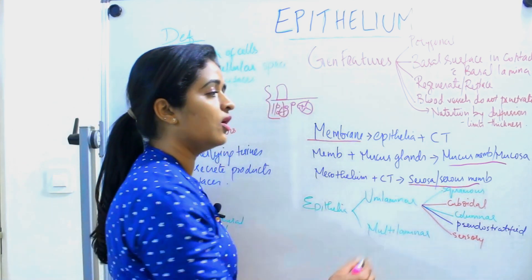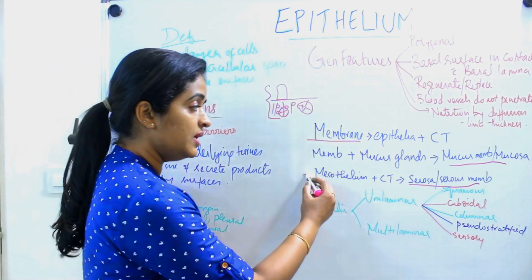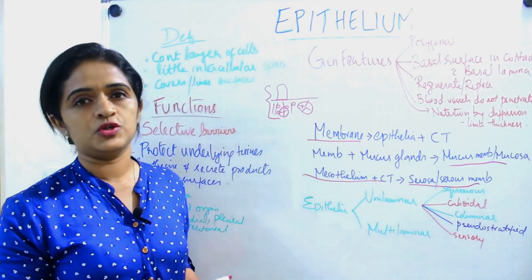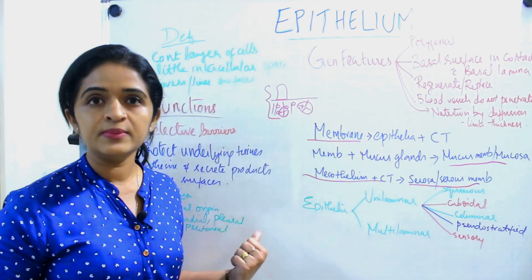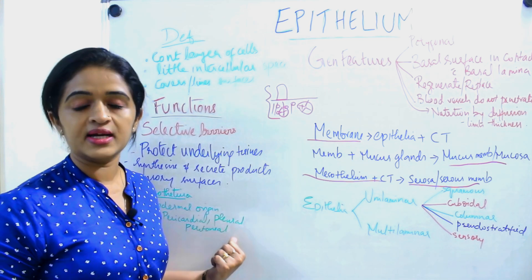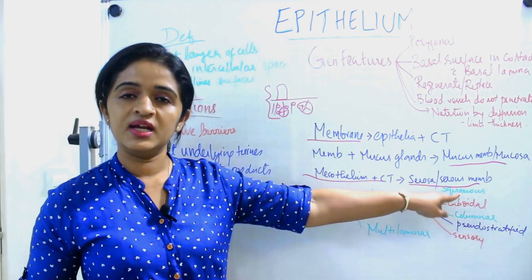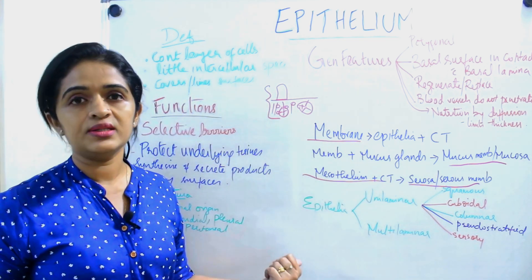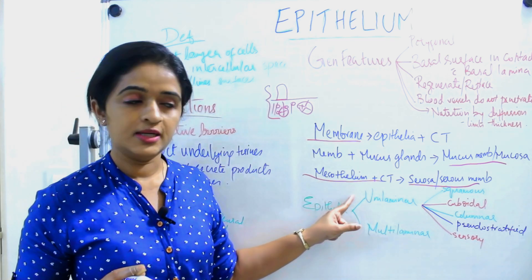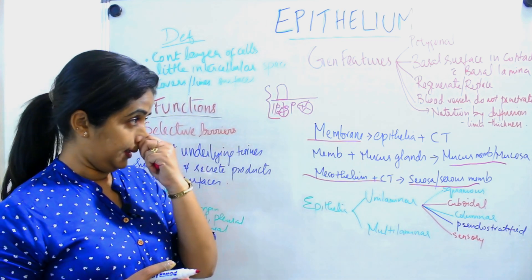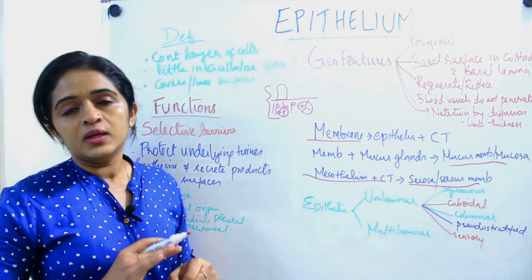Another entity is known as serous membrane or serosa. When will you call it that? Serous membrane or serosa is nothing but mesothelium along with its connective tissue. We already mentioned that mesothelium are epithelial cells derived from mesoderm, usually seen in the pericardial cavity, pleural cavity, and peritoneal cavity. So you will see the serosa in these cavities, and the definition of serous membrane or serosa is mesothelium along with its connective tissue. These three terminologies — membrane, mucous membrane, and serosa — you should be thorough with.